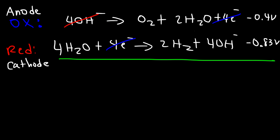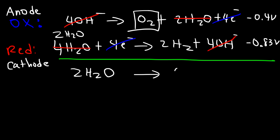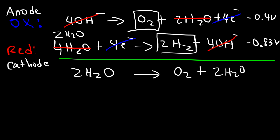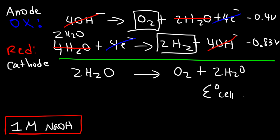Adding the two half-reactions together, the hydroxide ions cancel, and we have 4 H₂O on the left and 2 on the right, so subtracting 2 H₂O from both sides gives the overall reaction: 2H₂O → O₂ + 2H₂. At a standard concentration of 1 M sodium hydroxide, the overall cell potential is -0.40 + (-0.83) = -1.23 V. This is the minimum voltage required to drive this reaction forward.